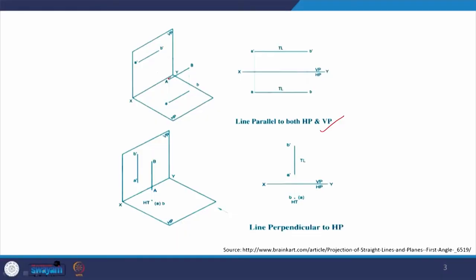If you look at the screen, this is the line we are talking about — it is parallel to both VP as well as HP. If you look at the projections, these projections will match, which is the fundamental of orthographic projection always, and we will see the true length in both VP as well as HP. This is what we will be seeing if the line is parallel to both HP and VP.